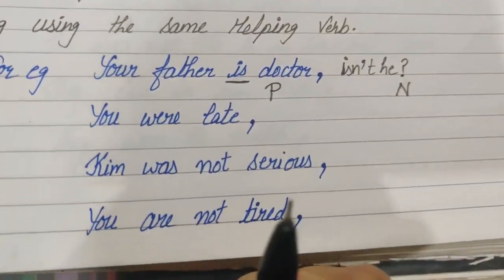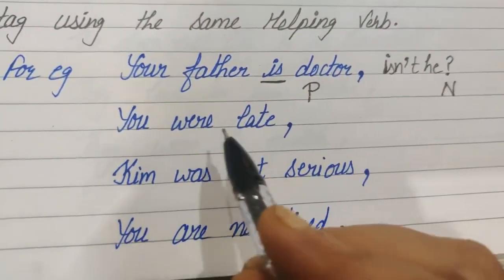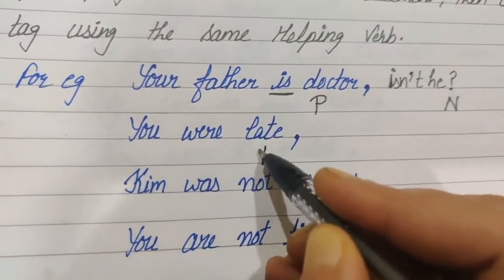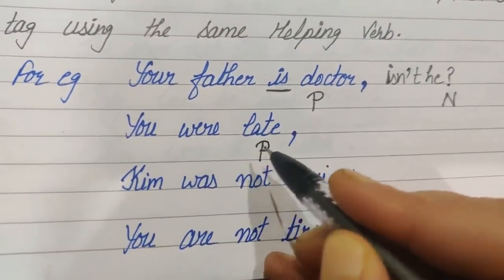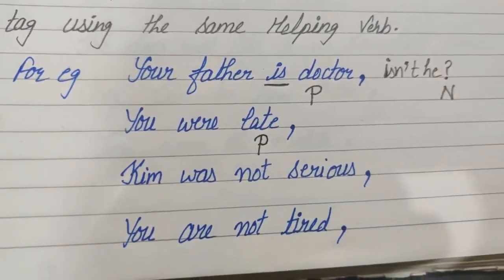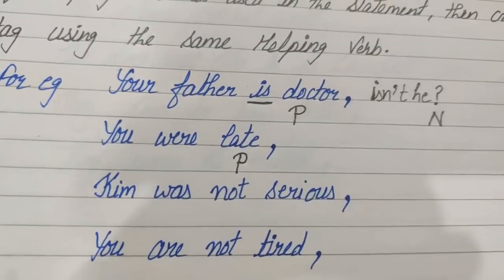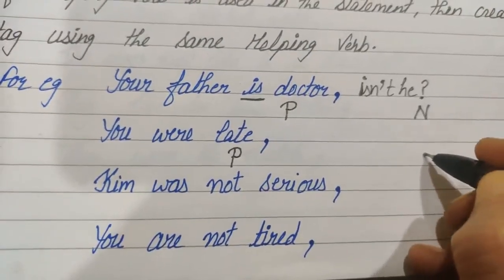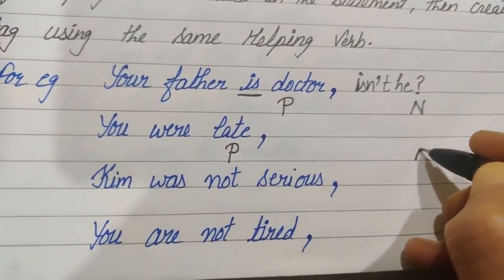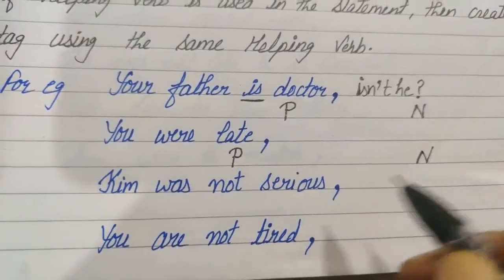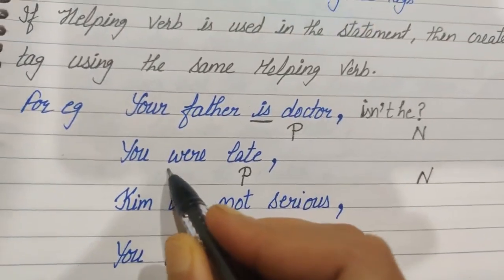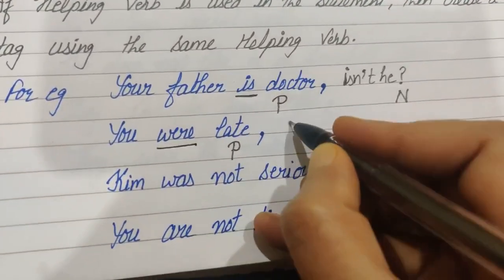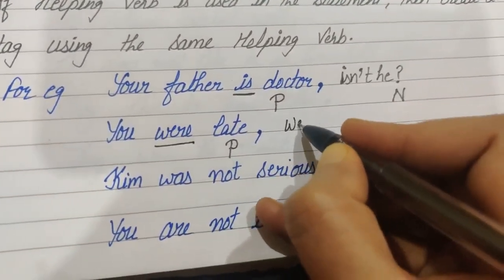See the next one: 'You were late.' Again, it's a positive statement, so its tag would be negative. The helping verb is 'were,' so 'were' negative becomes 'weren't,' and the pronoun is 'you.' So the answer becomes: weren't you?